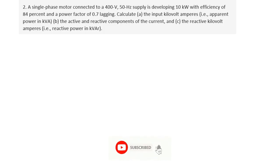Let's continue with the second example. A single-phase motor connected to a 400V 50Hz supply is developing 10kW of power with an efficiency of 84% and a power factor of 0.7 lagging. Calculate: A) the input power in kVA (apparent power), B) the active and reactive components of the current, and C) the reactive kVA, that is the reactive power in kVAR.